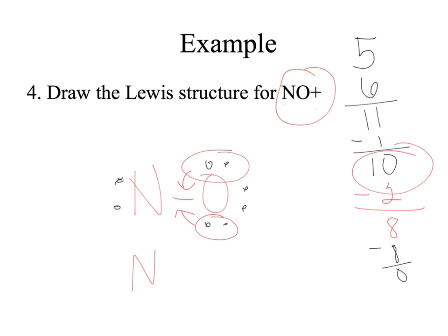Let's rewrite it: we have nitrogen and oxygen with three bonds between them, and a lone pair on each. Nitrogen is sharing six electrons and has two of its own, so it has eight. Oxygen is sharing six and has two, so it has eight. Both atoms are stable. Remember, when drawing a Lewis structure for a polyatomic ion, you have to account for electrons lost or gained.